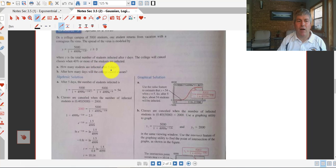So how many students are infected after 5 days? Well, since t is our 5, we substitute 5 in for t, and we can just put this right into our graphing calculator and calculate the value, and we get 54.